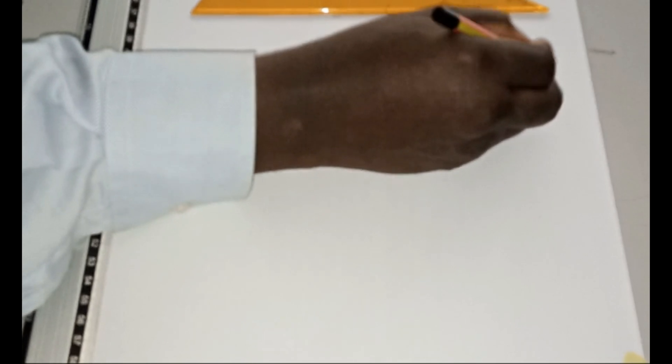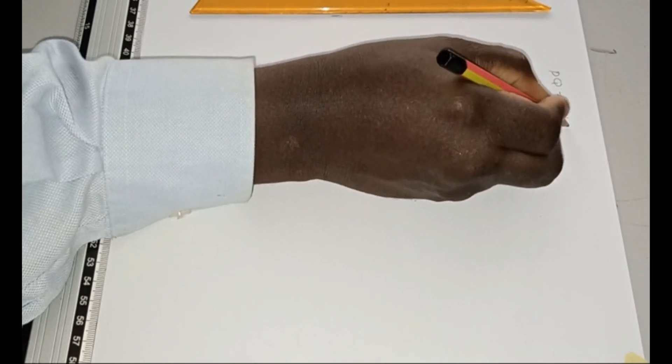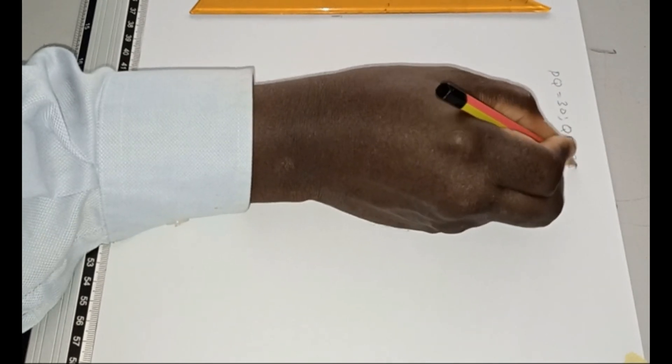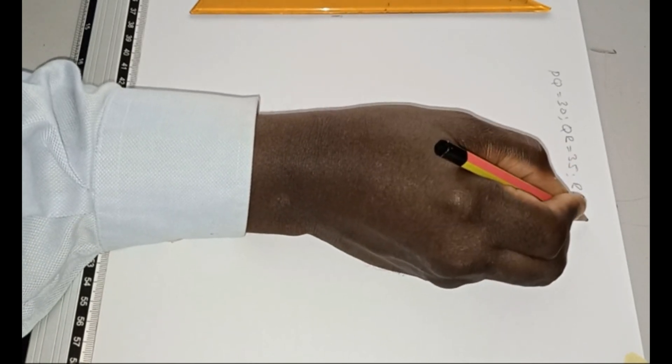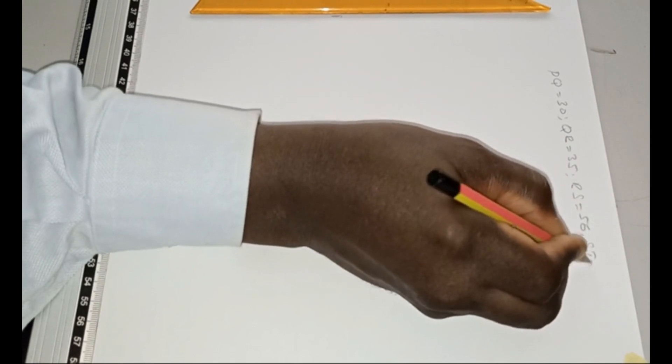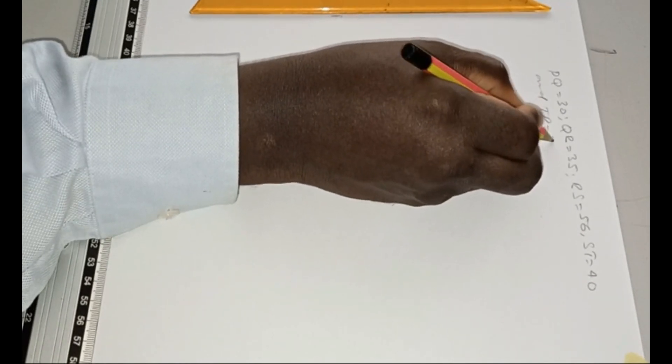The plane figure in this case is a pentagon, a regular pentagon PQRST. The parameters are given as PQ equal to 30, QR equal to 35, RS equal to 56, ST equal to 40, and TP equal to 20.